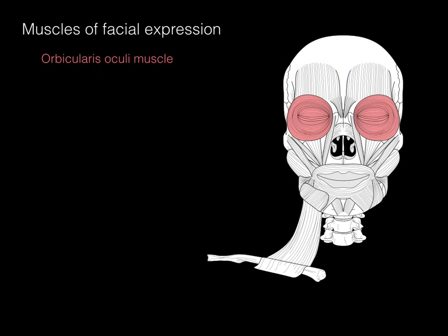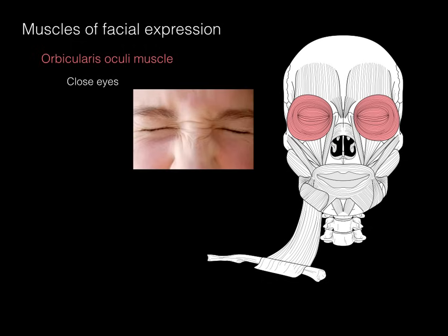Next is the orbicularis oculi muscle. This is a sphincter muscle. It's circular, as you can see in the circular pattern of these muscles — part on the orbit and part on the eyelid. The function of this muscle is to close the eyes, as in winking or keeping your eyes shut. That's the orbicularis oculi muscle.